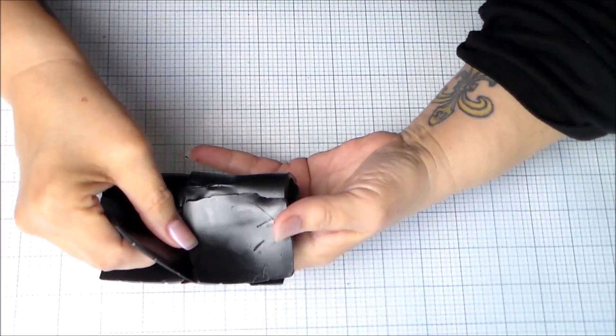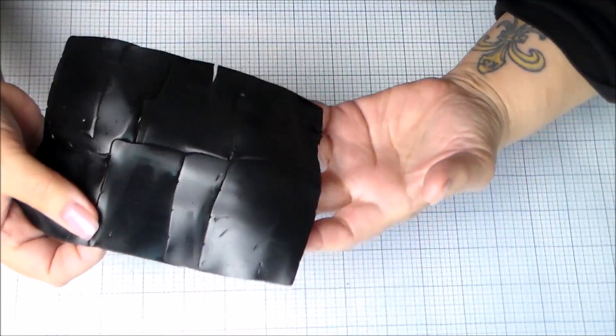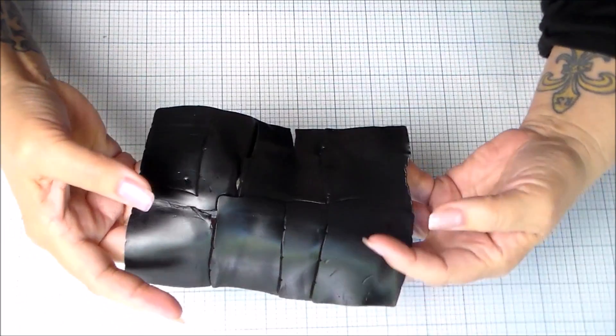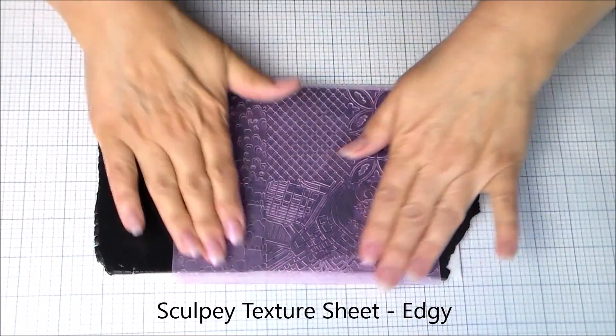That's, on my machine, the third thickness, zero, one, two. And you want to make a nice, even sheet that's at least five by seven.